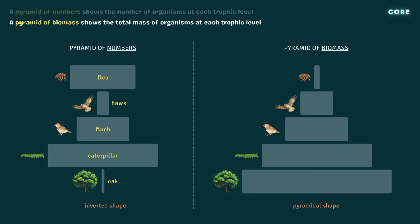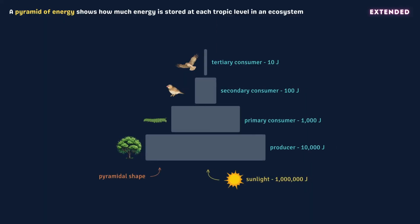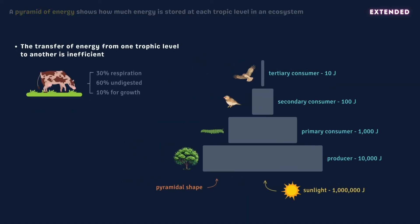That's everything for core, so we'll move on now to the extended content. A pyramid of energy is used to show the flow of energy from one trophic level to the next within a food chain. Starting with the producers, energy is transferred from one trophic level to the next, but only a small proportion is passed on each time. In fact, only around 10% of the original energy is available to the organism at the next level. The transfer of energy from one trophic level to another is very inefficient, so much so that biological systems rarely exceed 5 trophic levels — there simply isn't enough energy left in the system to sustain a sixth.